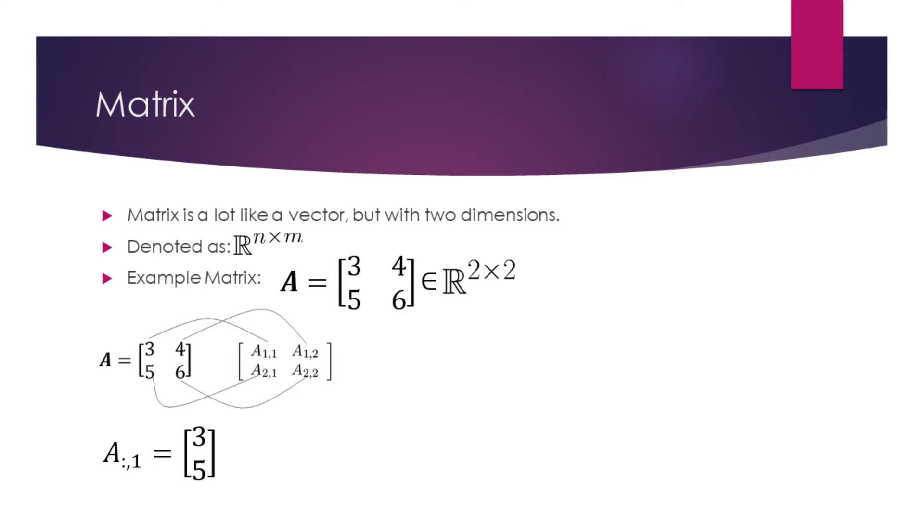If we want to identify the entire row or the column, we can use a colon. In the example at the bottom of the slide we use the colon left to the comma in the subscript. This means that we are targeting all the rows of the first column.